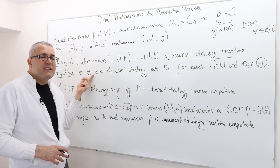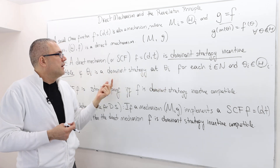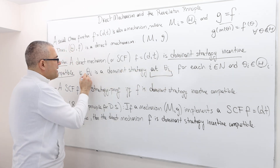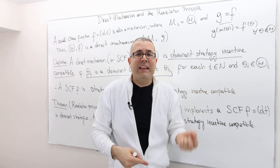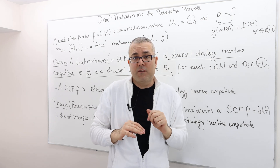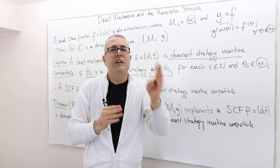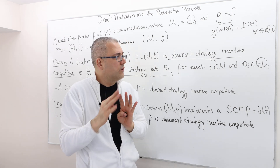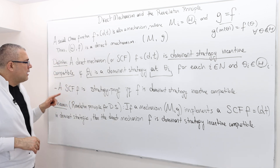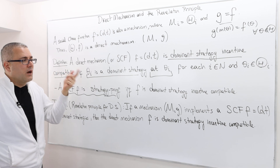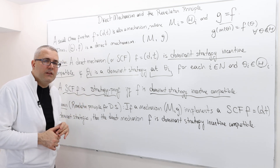That means θᵢ is a strategy — telling the truth — and telling the truth is a dominant strategy at θᵢ means telling the truth is a dominant strategy for each player i at any type profile, whatever their true type is. So if the state is state 1, telling state 1 is a dominant strategy; if the state is state 2, telling state 2 is the dominant strategy, and so on. If this is true, then the direct mechanism F is dominant strategy incentive compatible — or, since that name is very long, we just call it strategy proof.